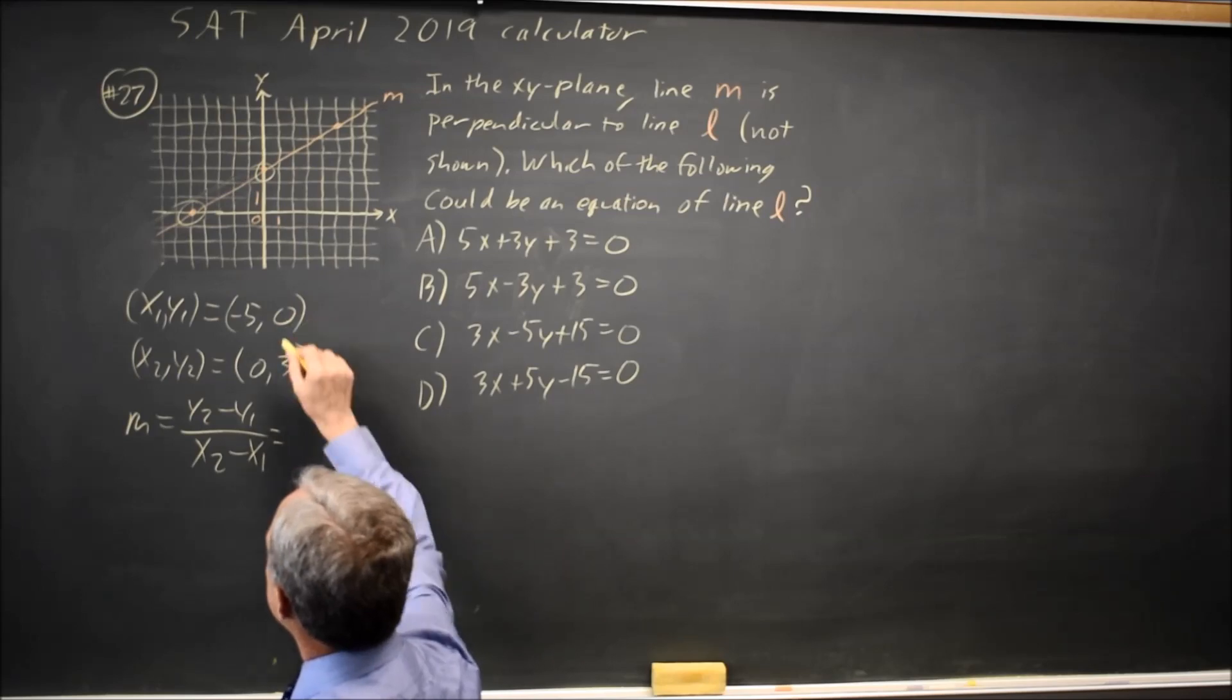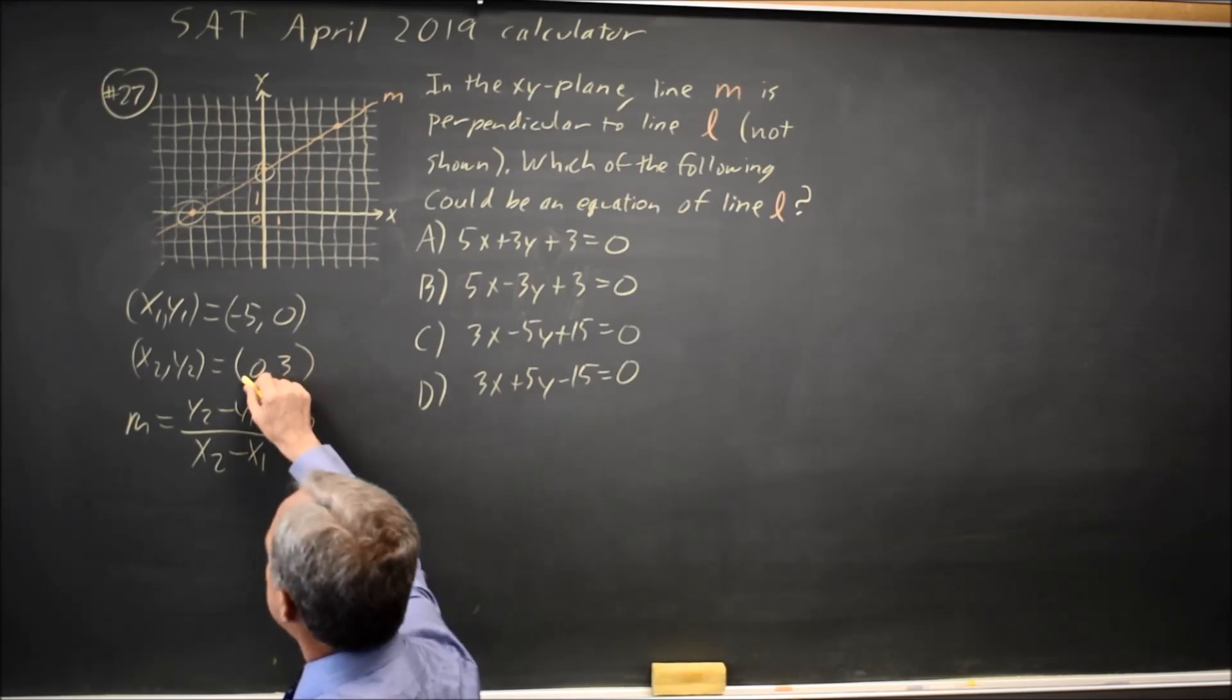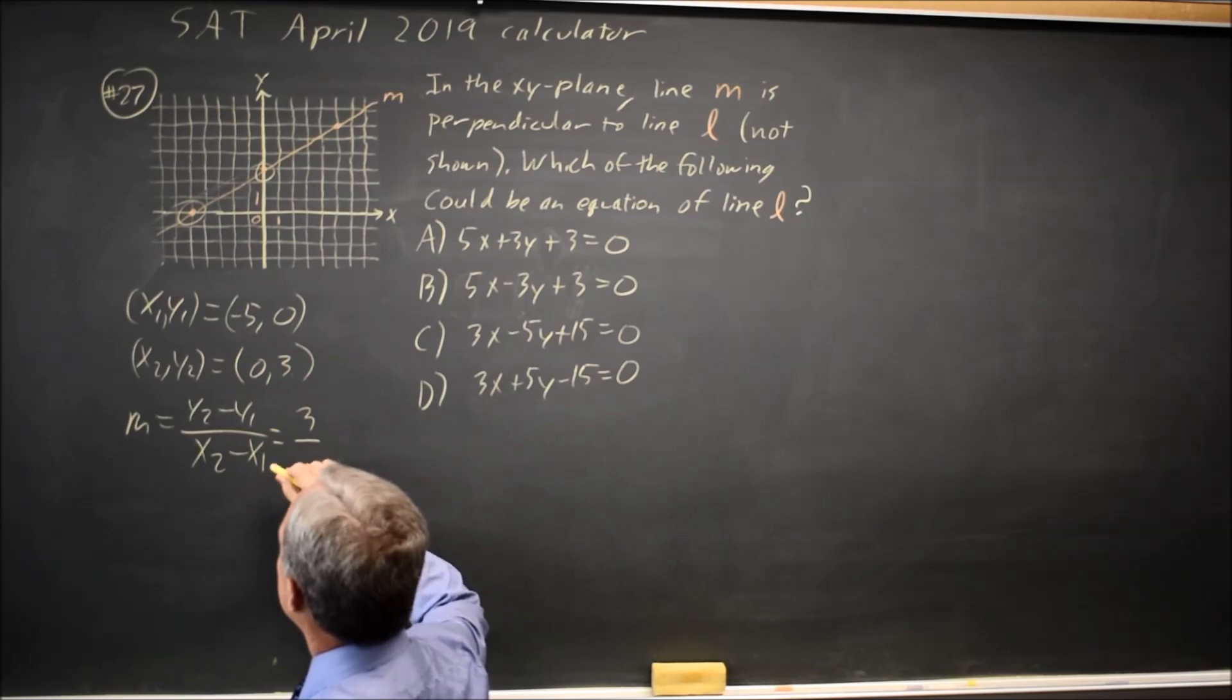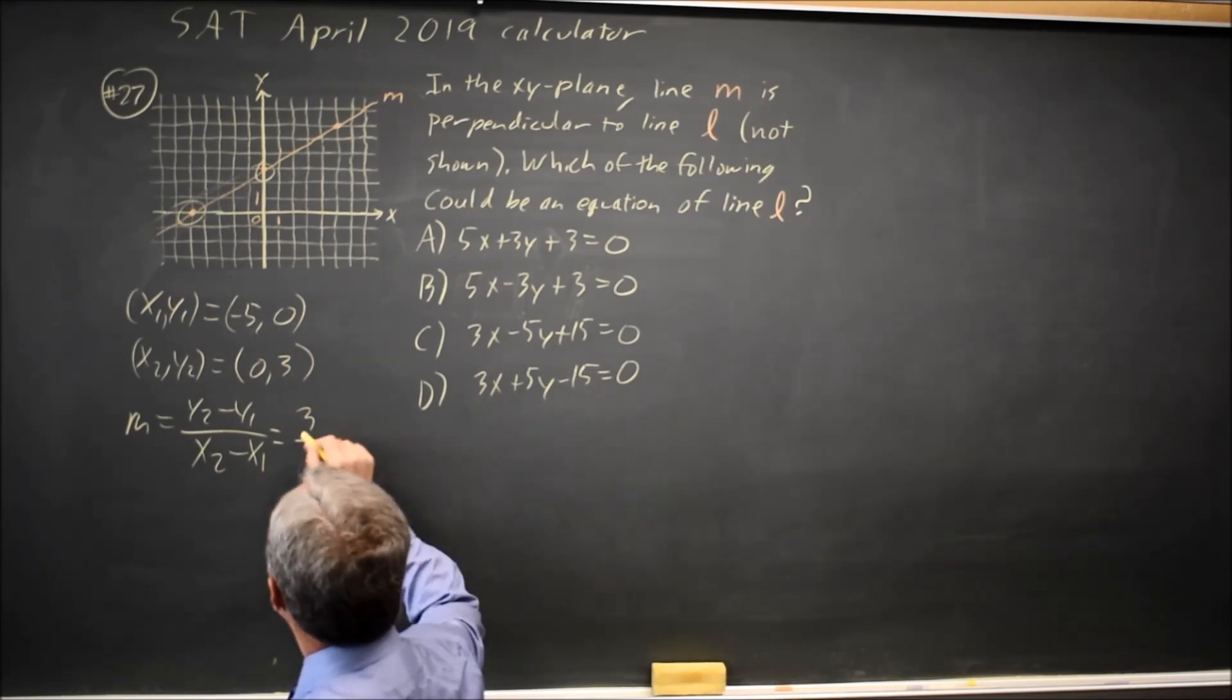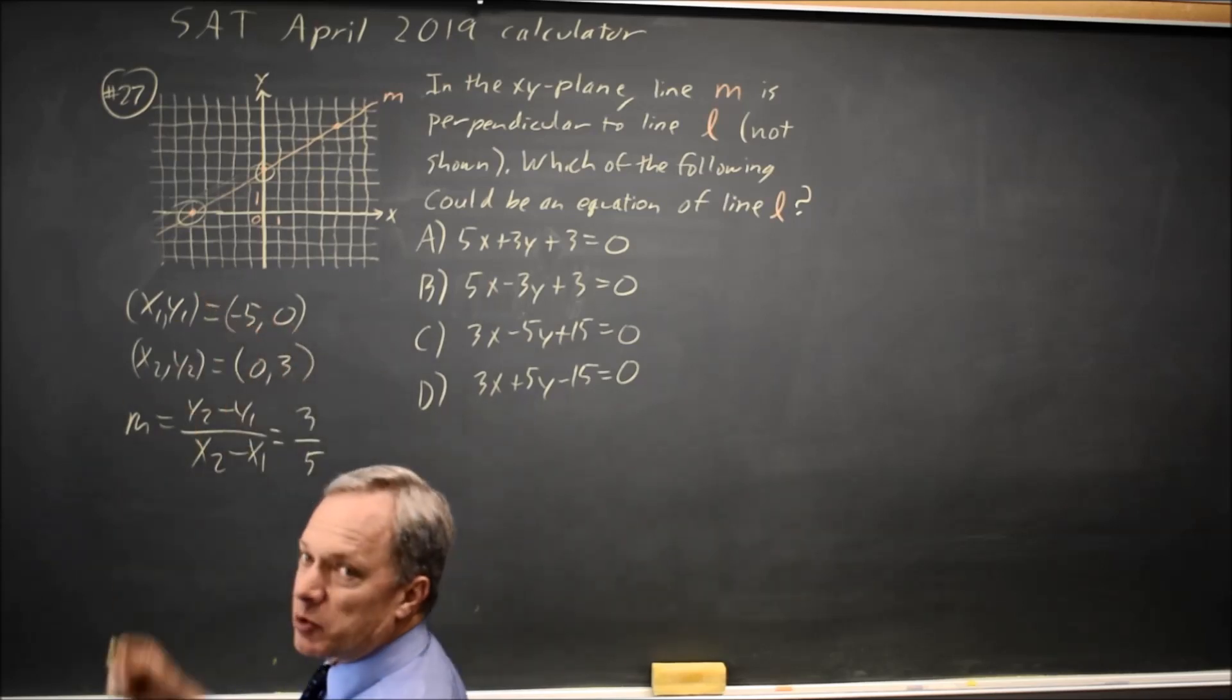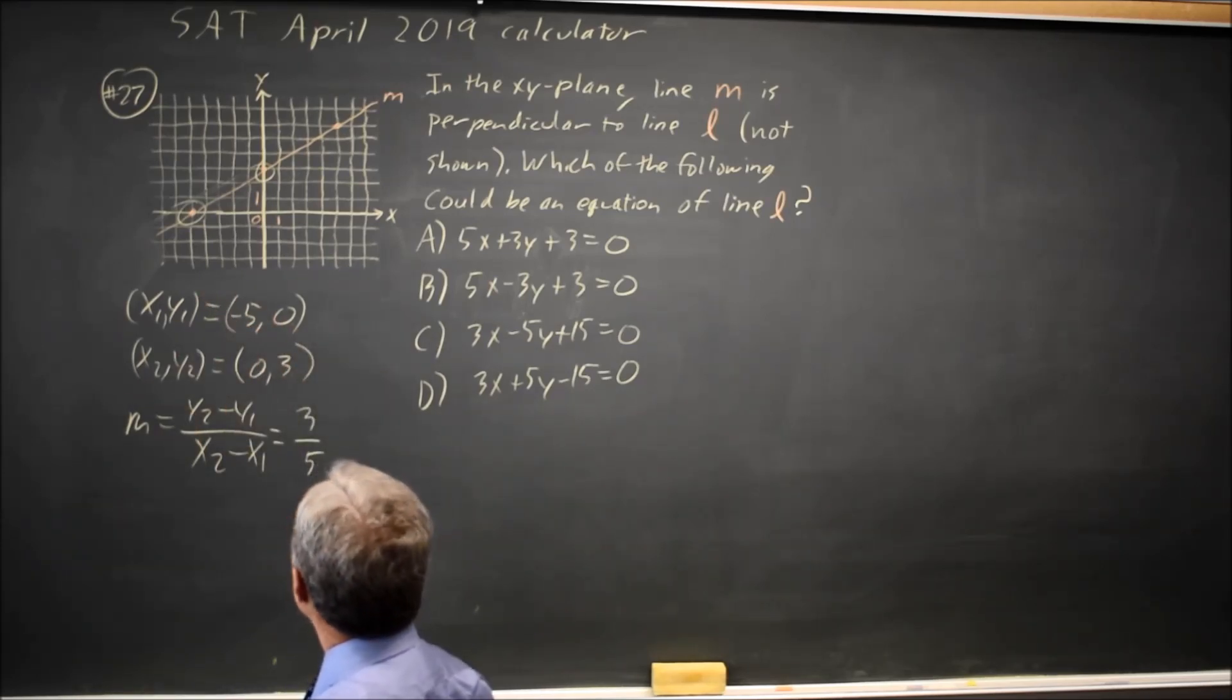So y2 minus y1 is 3 minus 0 is 3. x2 minus x1 is 0 minus negative 5 is positive 5. So our slope is 3 fifths. And we do see it as a positive slope, so I didn't flip the sign on that.